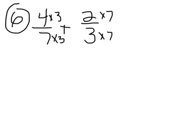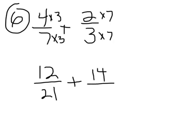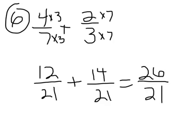7 is over here multiplied, and the 3 is over here multiplied. Our new fractions now are 12, 4 times 3 is 12, over 7 times 3 is 21, plus 14, 7 times 2, or 2 times 7 is 14, over 21, which equals that magic number 26 right there, over 21.